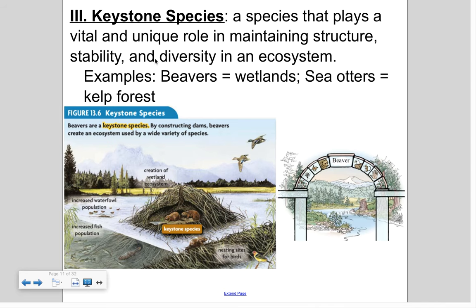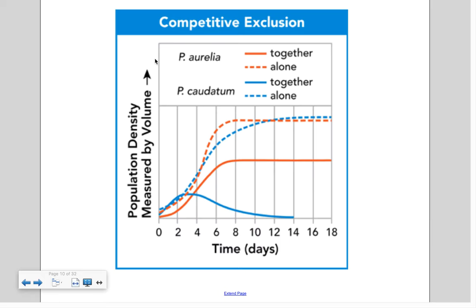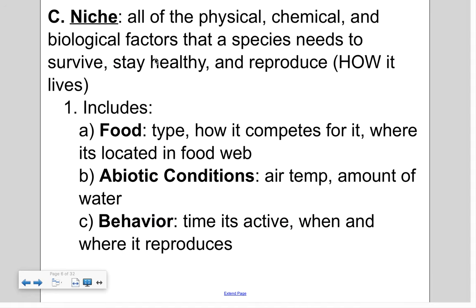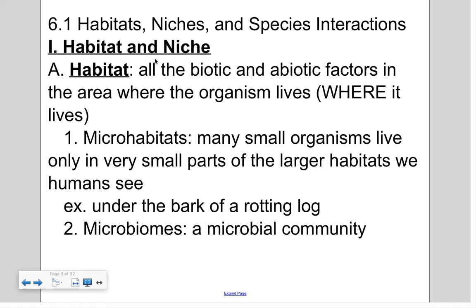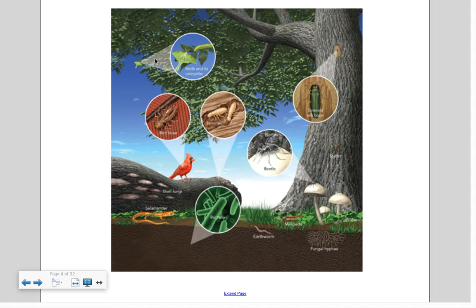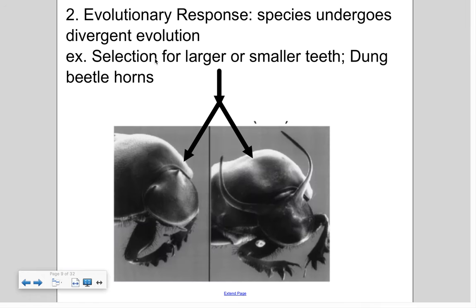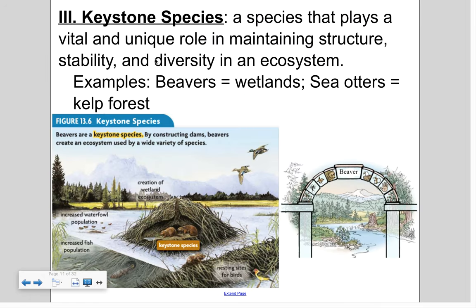Welcome back to biology, this is Erickson covering the second part of section 6.1. Yesterday we talked about competitive exclusion with the gray squirrel versus red squirrel, and the difference between a habitat and a niche. A habitat is where an organism lives, and a niche is how it lives in that environment.